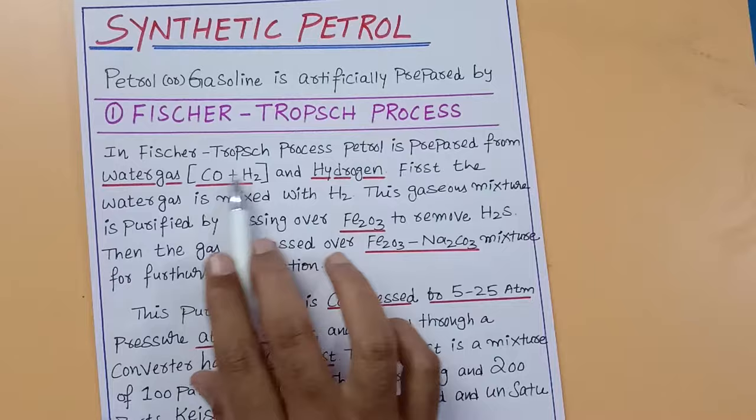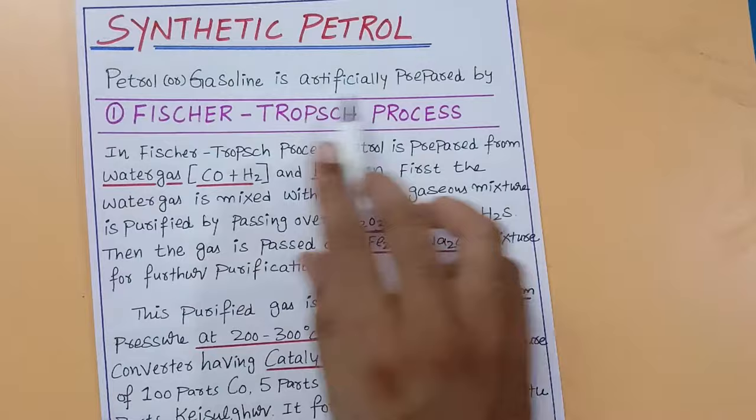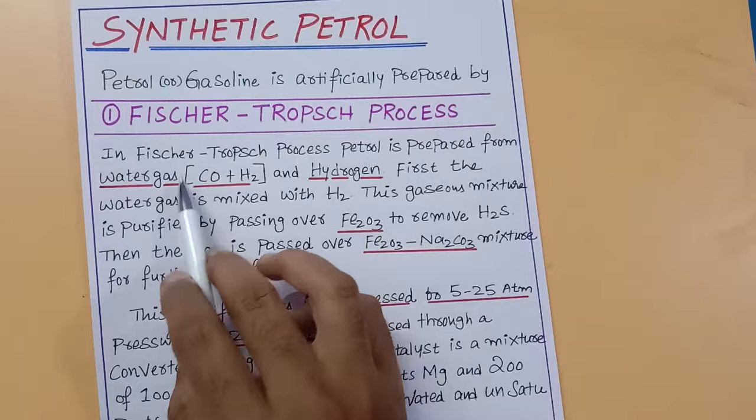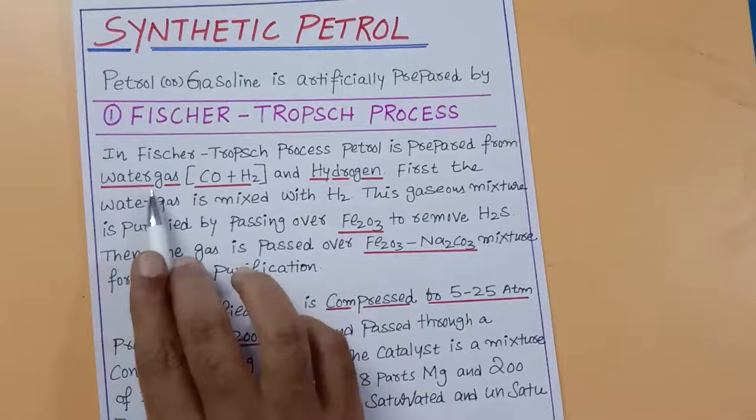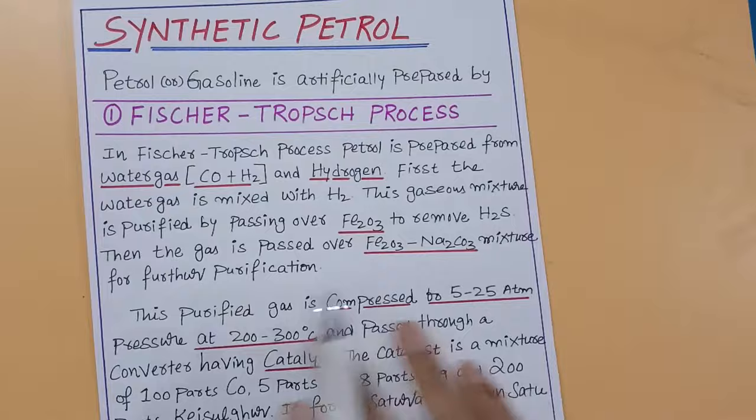Because of the demand and excess hydrogen usage, this involves carbon and hydrogen. The major components are hydrocarbons. For gasoline or petrol, hydrocarbons are present. We make carbon and hydrogen react. Even in the Fischer-Tropsch process, we use water gas and hydrogen to prepare petrol.